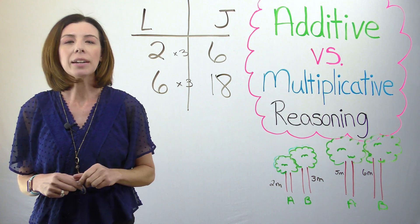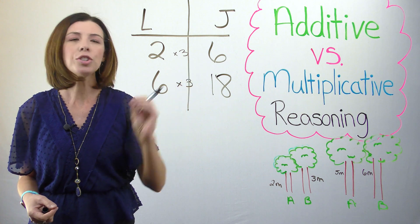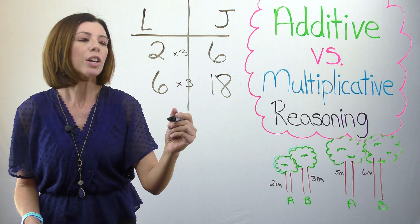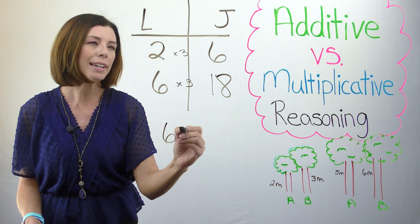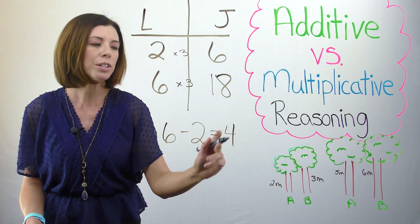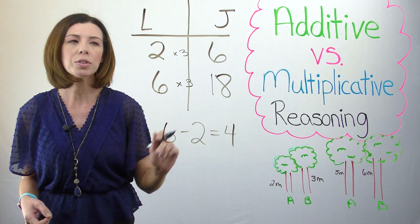Let's look at it additively. If Lisa is 2 and James is 6, then we could say that James is 4 years older. Again, I'm doing 6 minus 2 using my subtraction to say that James is 4 years older.